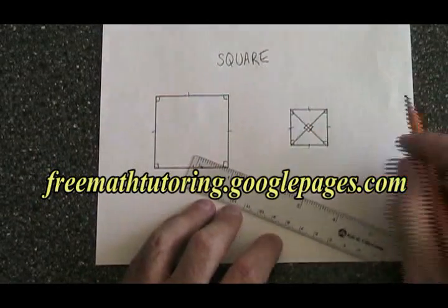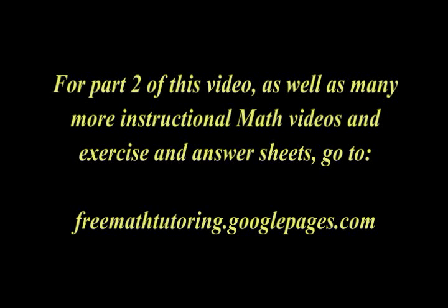And the diagonals of a square have to be equal in length to each other. Thank you.